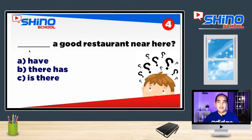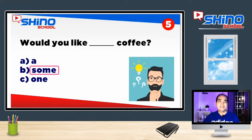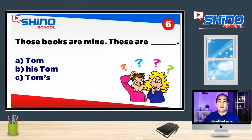Pergunta de número 4: ___ a good restaurant near here? Letra A: have. Letra B: there has. Letra C: is there. Resposta correta, letra C: is there. Pergunta de número 5: Would you like ___ coffee? Letra A: are. Letra B: some. Letra C: one. Resposta correta, letra B: some. Pergunta de número 6: Those books are mine. These are ___. Letra A: Tom. Letra B: his Tom. Letra C: Tom's. Resposta correta, letra C: Tom's.